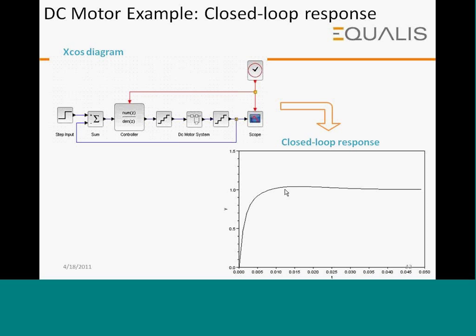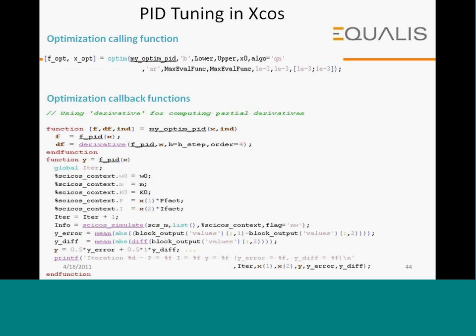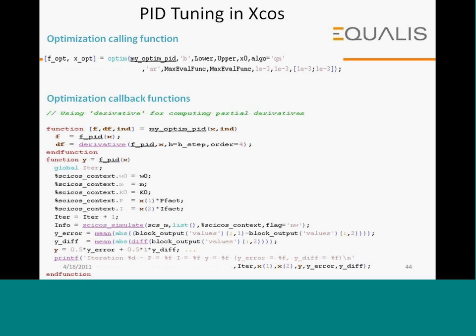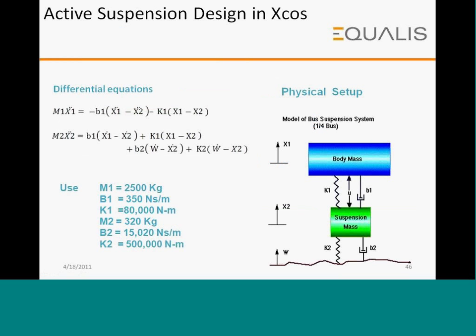PID tuning in XCOS is an interesting example I'll show in the actual demos. Here there is a square wave generator and we show simulations with and without correctly tuned proportional, integral, and derivative constants. This shows a snapshot from the PID tuning program. Since XCOS is linked to Scilab, you can write Scilab programs that talk to your XCOS simulation. With untuned PID values — P=1, I=1, D=0 — the result is poor tracking. After optimization, the tuned P, I, and D values are obtained and the output closely follows the input.